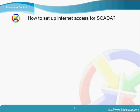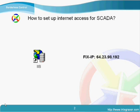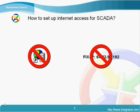Integraxer Web Scada server was actually designed to be accessible via internet, even though most of the time it is used on an intranet basis or simply just as a desktop application. Another thing worth mentioning is that no IIS server and no fixed public IP is needed for configuring Integraxer Web Scada server for remote access. All you need is just an Integraxer Web Scada server and a DNS client tool, which is free.